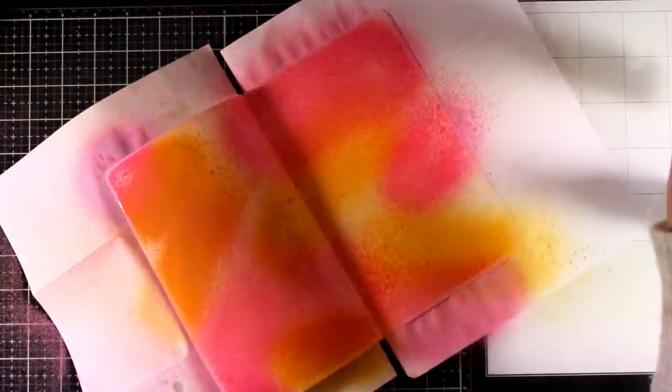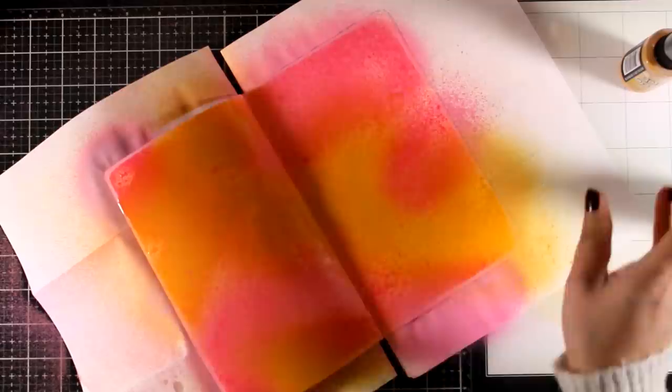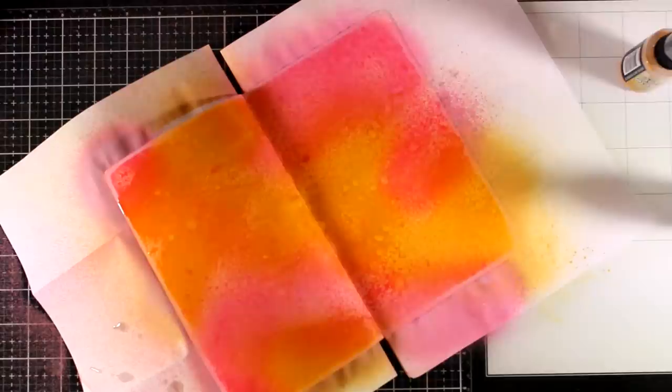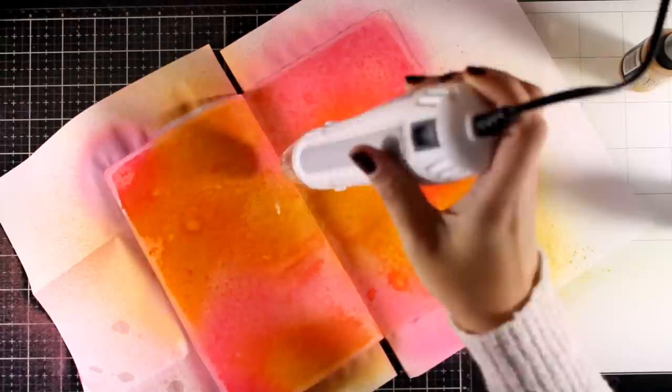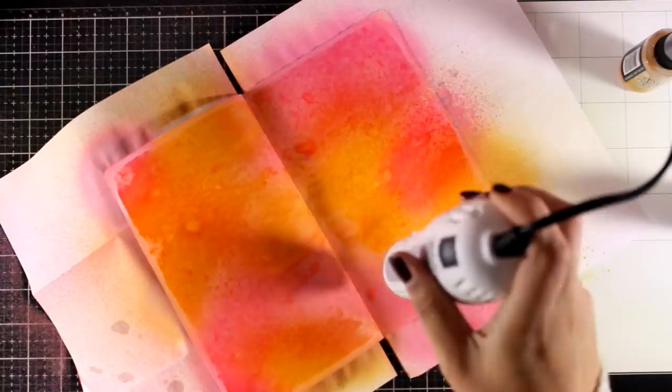And of course you can go ahead and spray even more layers if you like. I'm adding even more water on top and then I'm going to use my heat gun and just make sure that everything is dry. Now all the colors look very bright at the moment but once the pages are completely dry it's going to give me that chalky finish look that you get when you use your Distress Oxide Inks or Sprays.